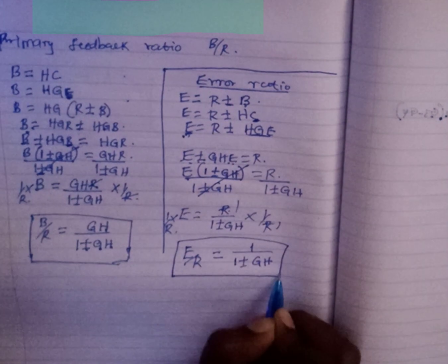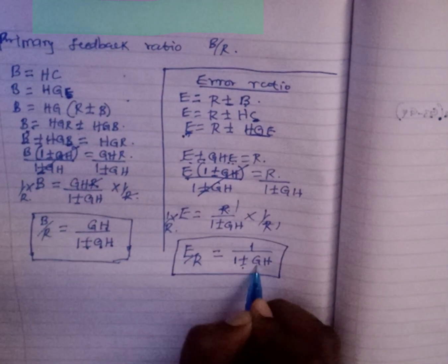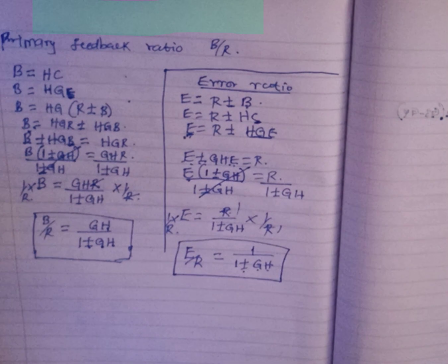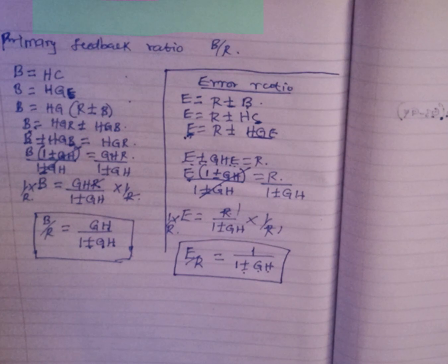That's how we get the error ratio — simply 1 over (1 ± GH). Thank you so much for watching.